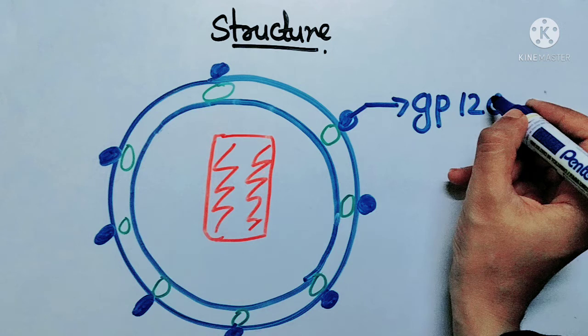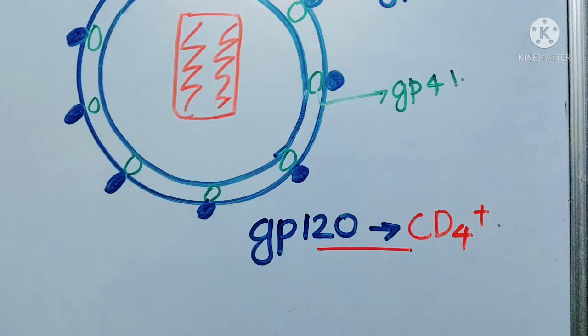Let's look at the structure of the glycoproteins on HIV. The first glycoprotein is called GP120, and the second is called GP41. GP stands for glycoprotein. GP120 focuses on CD4 receptor cells, that is the T helper cells and macrophages.